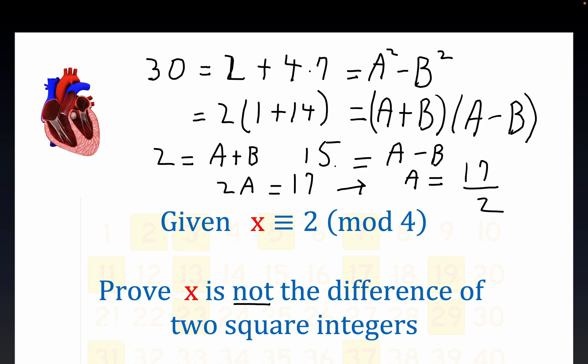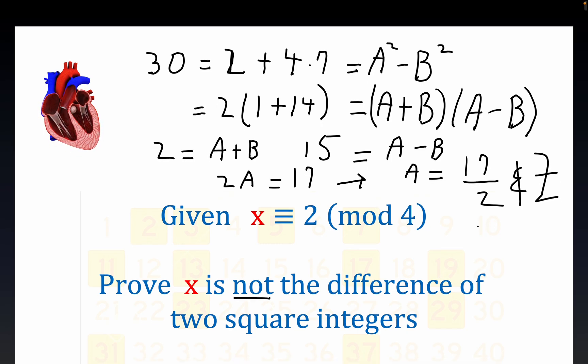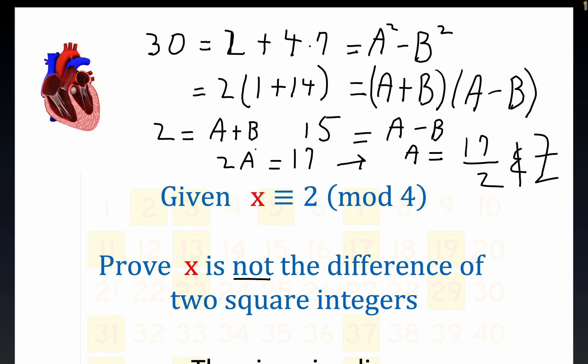So you see, 30 is in this form, and if you try to write it as the difference of two squares, you're going to get one of the numbers, and it's not an integer. It's not a member of zahlen. Now, so that's just one case. Let's go through this in general.